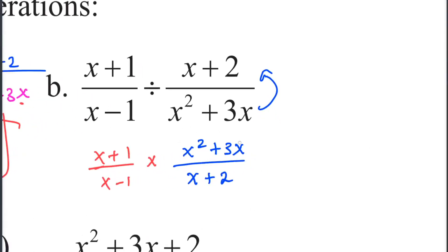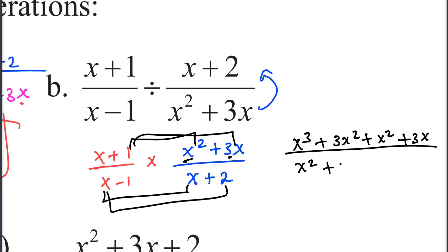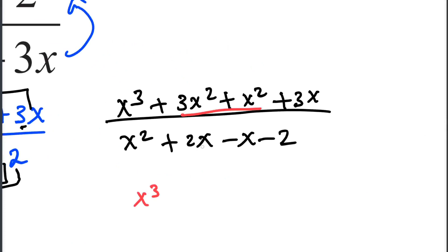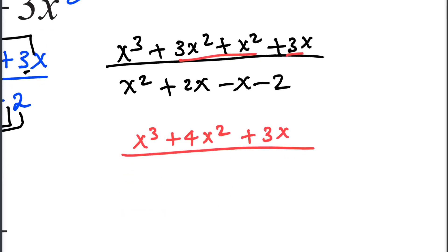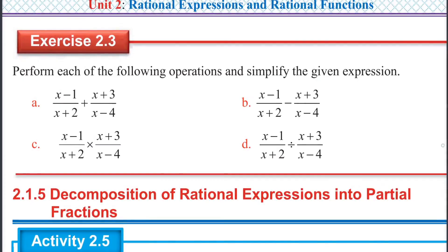x times x squared gives x cubed; x times 3x gives 3x squared. 1 times x squared gives x squared; 1 times 3x gives 3x. Over x times 6 gives x squared; x times 2 gives 2x. Negative 1 times x gives minus x; negative 1 times 2 gives minus 2. So numerator: x cubed plus 4x squared plus 3x, over x squared plus 2x minus x minus 2. Perform the following operations and simplify the given expression.